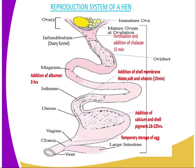The reproductive system is made up of several parts. First, we have the ovary. The ovary is responsible for the production of the ovum — in other words, the yolk, the egg yolk. After production, the yolk is released to the infundibulum, that is the ovary funnel, where fertilization takes place.